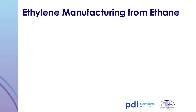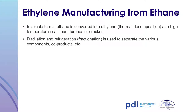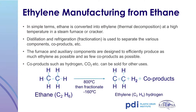This slide illustrates in more detail how ethylene is formed from ethane. Ethane is subjected to thermal decomposition, and after ethylene is formed, it can be fractionated or separated into various components and co-products, which can be sold for other uses. Distillation and refrigeration fractionation is used to separate the various components. The furnace and auxiliary components are designed to efficiently produce as much ethylene as possible and as few co-products as possible.